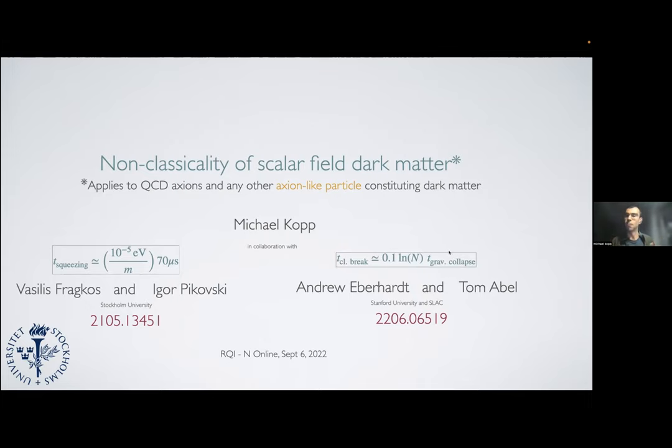The second time scale happens well after that, which we call the classical breakdown. The classical field description itself breaks down, and this is proportional to the time scale which gravitational collapse forms bound objects, boosted by the occupation number.